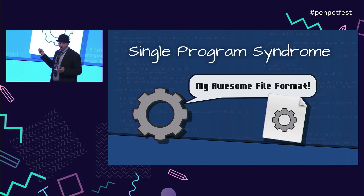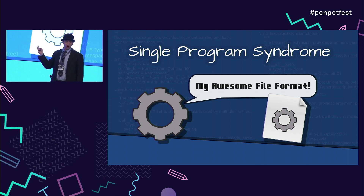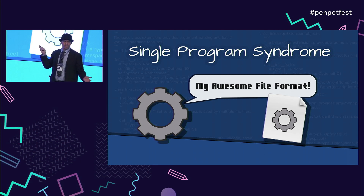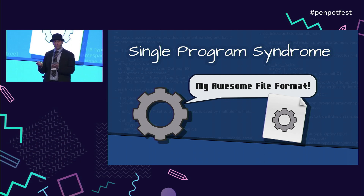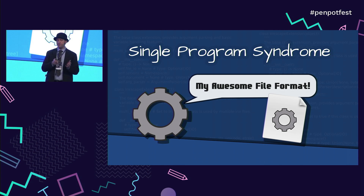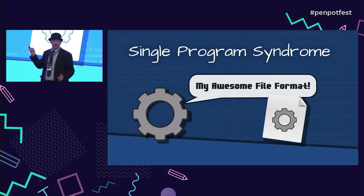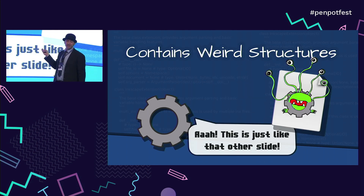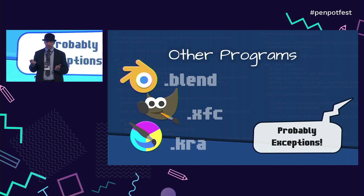We also have single program syndrome. This happens when you have a single program that uses its own file format. With Adobe Illustrator, you have a massive corporation with lots of individuals involved in programming it, but at the end of the day only one program is opening and saving AI files. That format is going to contain some very weird things. We know this because when we've done reverse engineering on AI files, you see some crazy stuff. What we want is files that are used by multiple programs for exactly the same reasons.